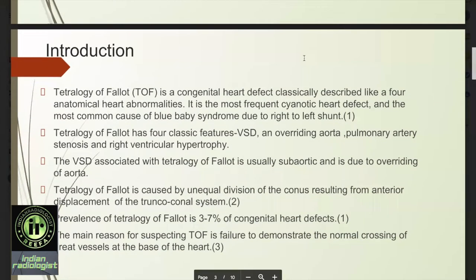Introduction. TOF is a congenital heart defect classically described by four anatomical heart abnormalities. It is the most frequent cyanotic heart defect and the most common cause of blue baby syndrome due to right-to-left shunt. Tetralogy of Fallot has four classic features: VSD, an overriding aorta, pulmonary artery stenosis, and right ventricular hypertrophy.